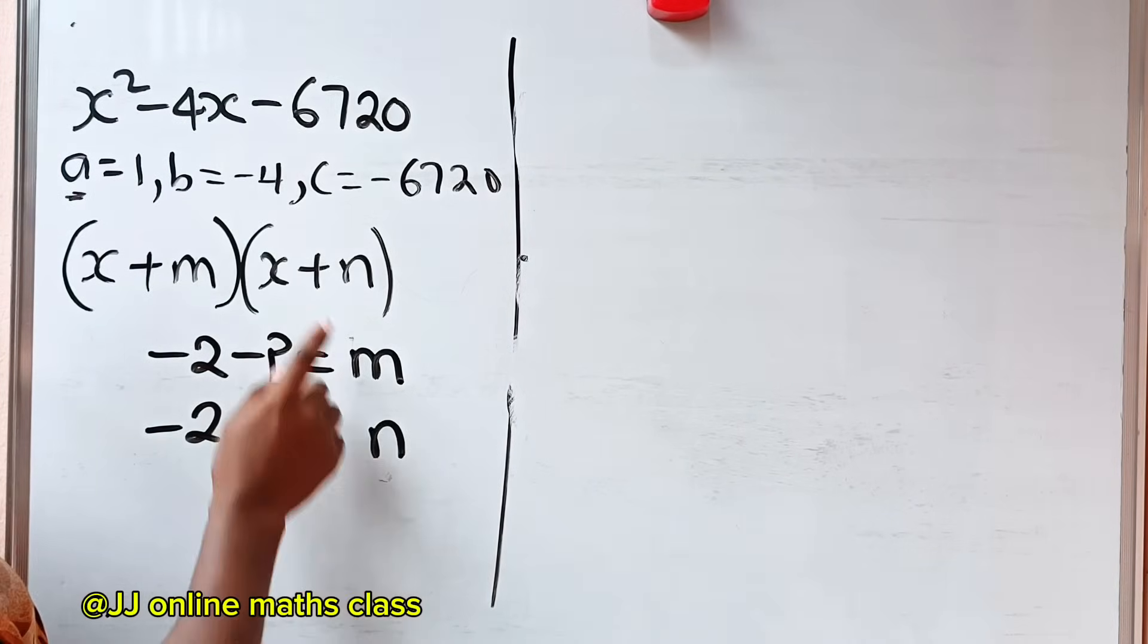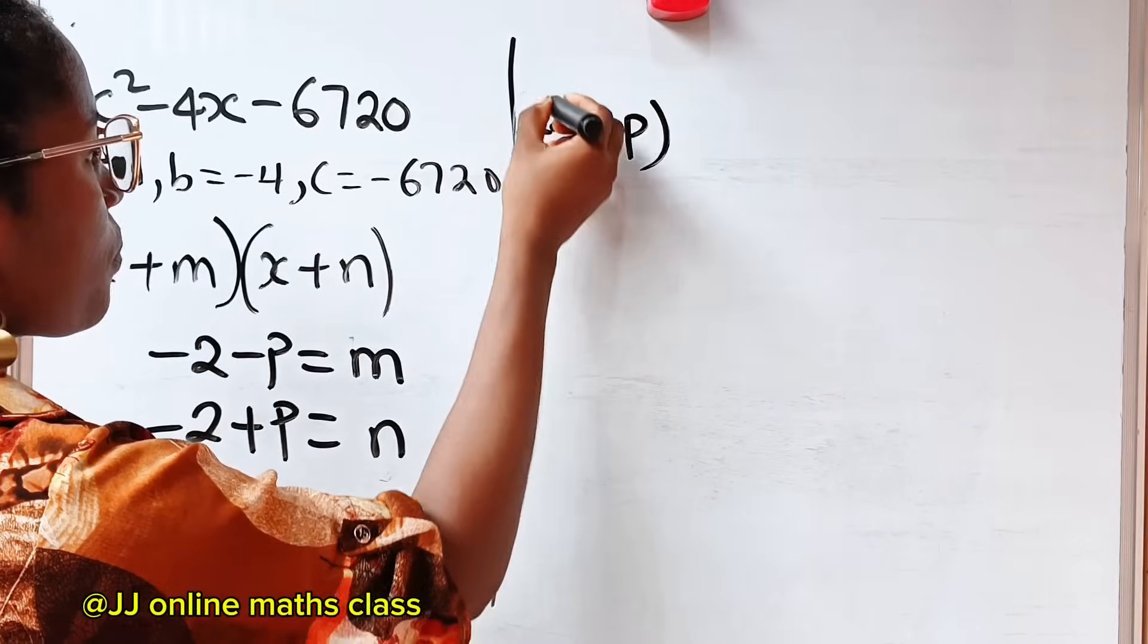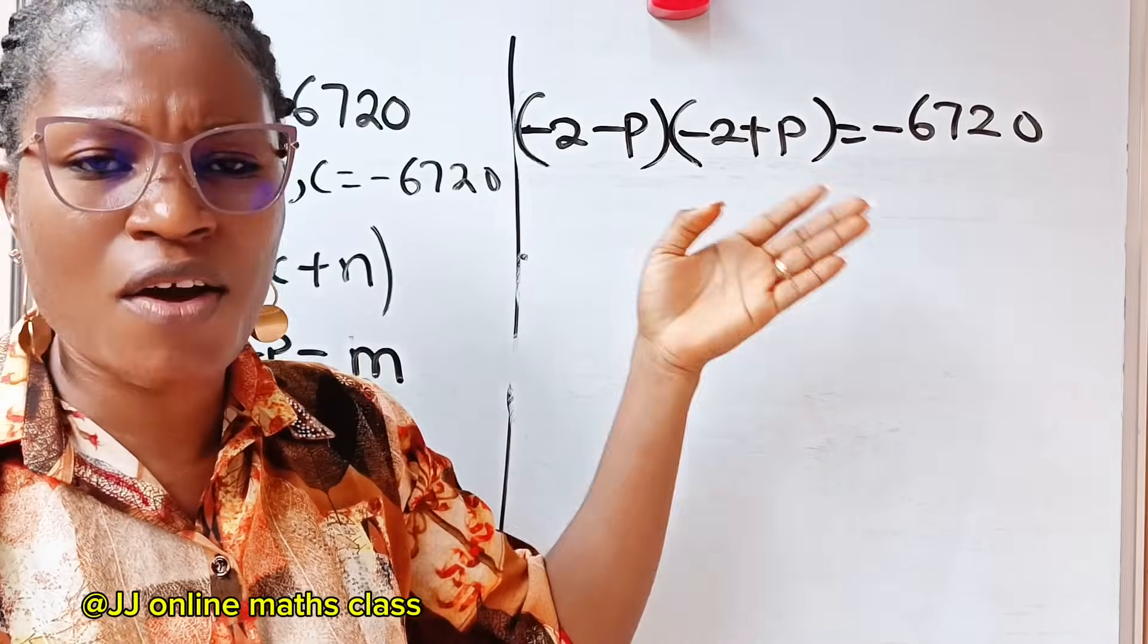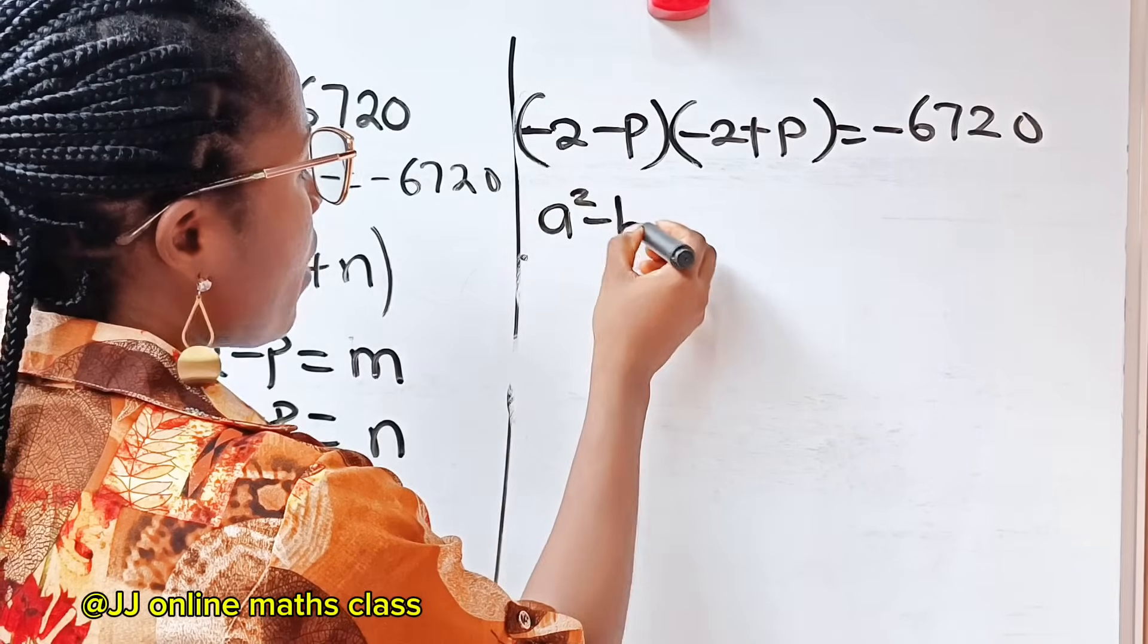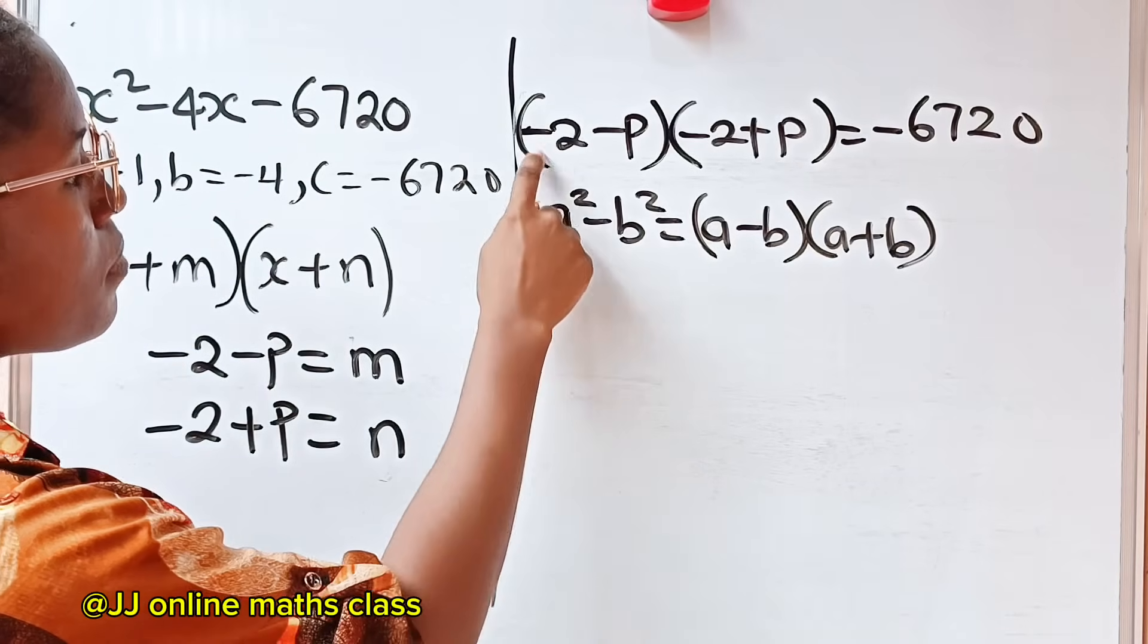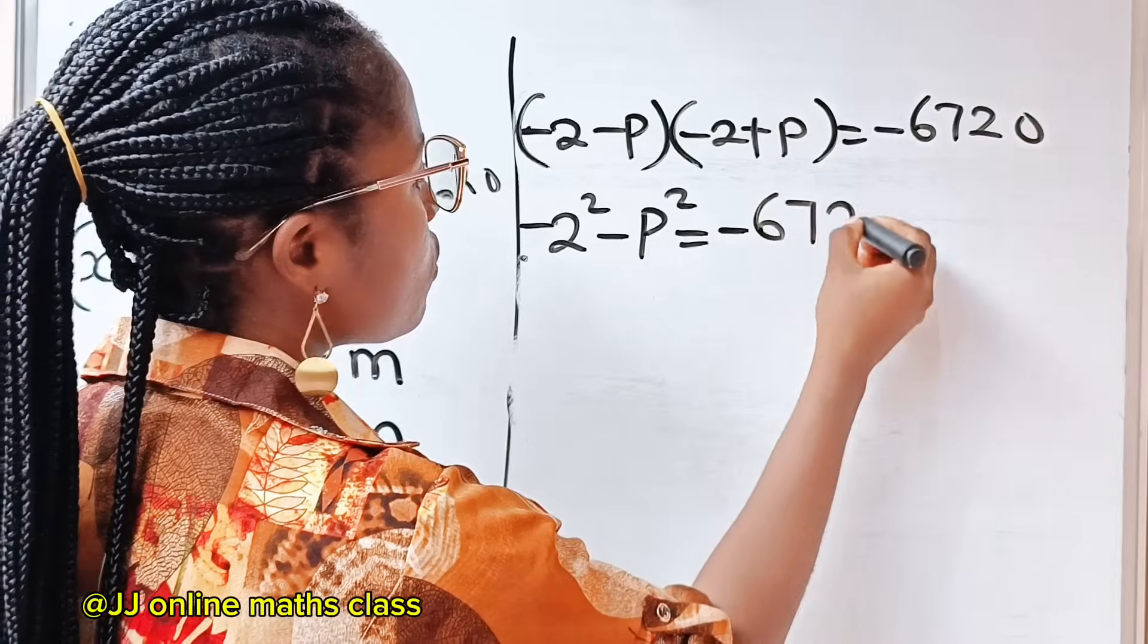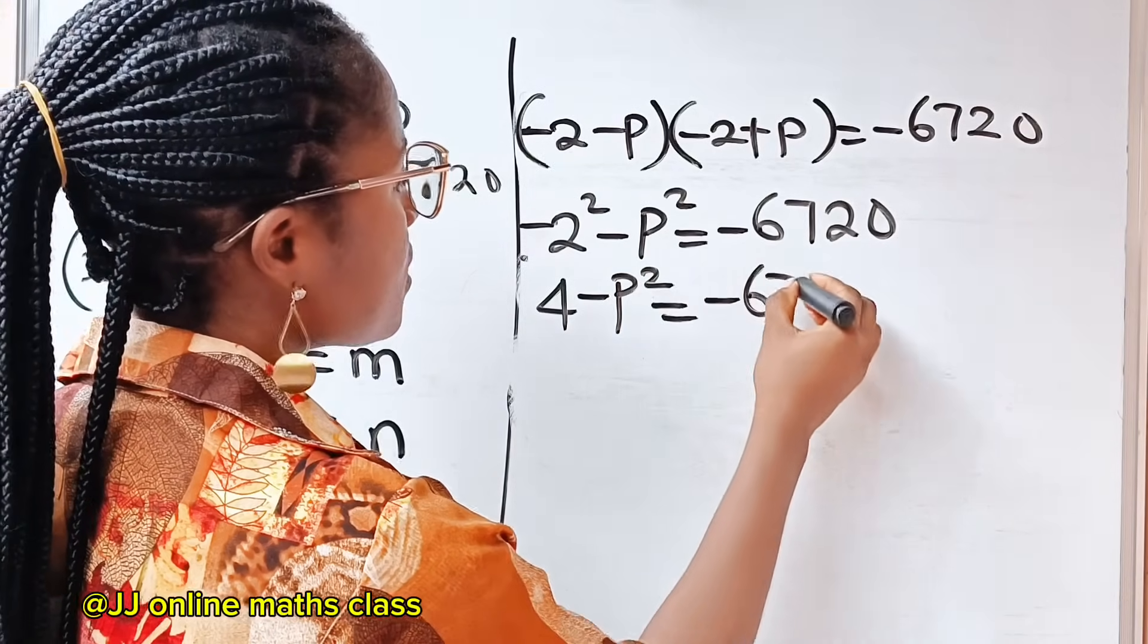Now, back to what I was saying. Remember that m plus n will give us minus 4, but m times n will give us this. And our m is this. So we have minus 2 minus p multiplied by our n, which is minus 2 plus p, to give us minus 6720. When you look at this, it's very easy to solve because this is difference of two squares. In this case, our a is minus 2 and our b is p. So it's going to be minus 2 squared minus p squared equals minus 6720. Minus 2 squared is 4 minus p squared equals minus 6720.